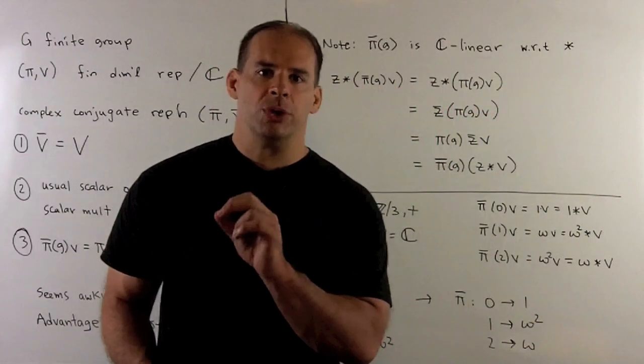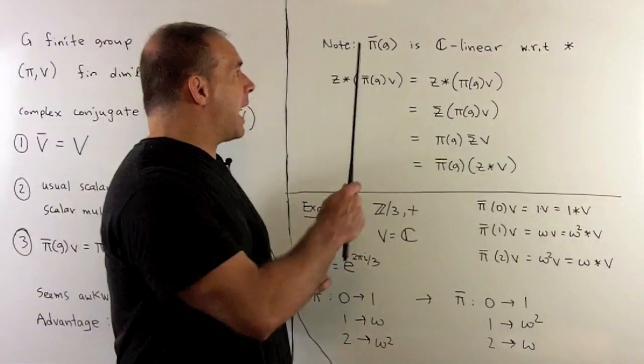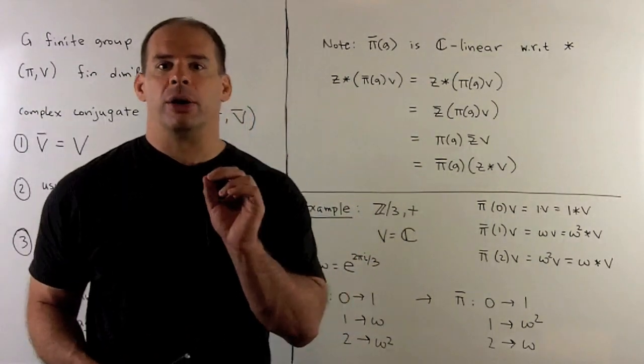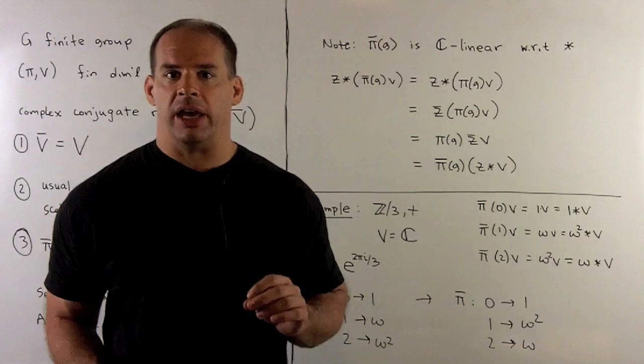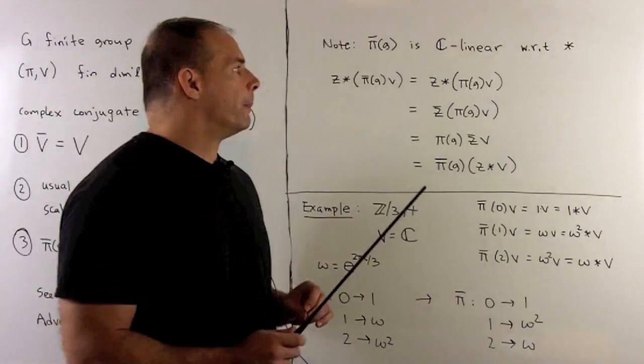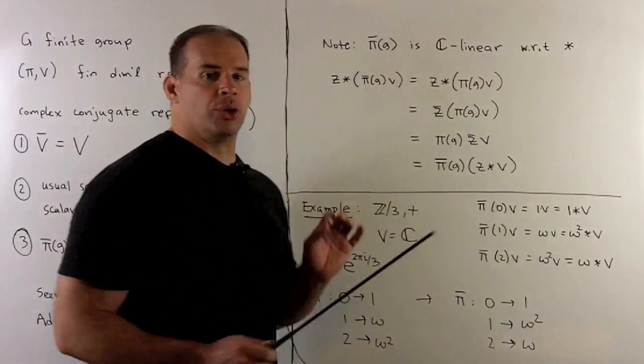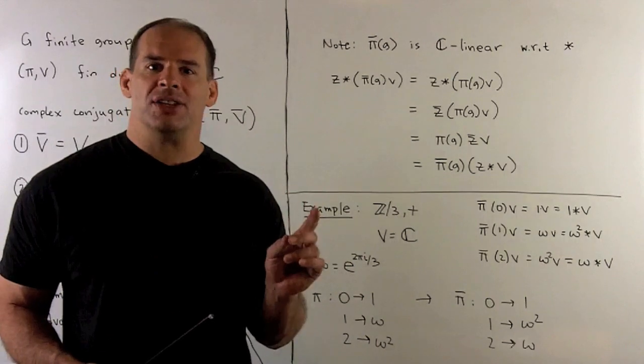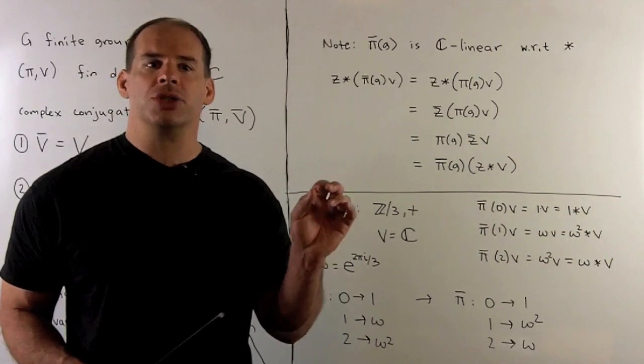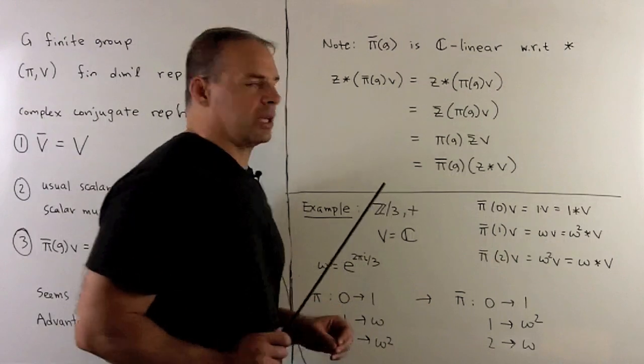Now, first thing we should check, that pi bar of G is a C-linear map with our new scalar multiplication. The additive property should be clear. All we've got to check is that multiplication by scalars factors through with our new scalar multiplication.